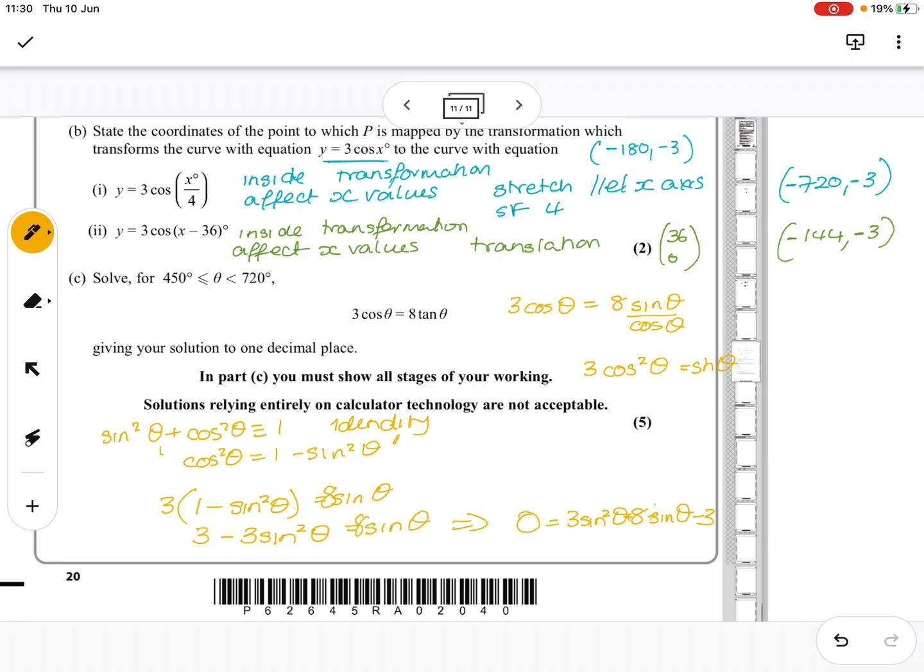So then I would put that straight into my calculator or see if I can factorise it. So 3 sin theta sin theta. 3 and 1 gives me 9. Make that a plus. Make that a minus. So I'm left with 3 sin theta minus 1 equals 0. So sin theta equals 1 over 3. Sin theta minus 3, sin theta equals minus 3. That's impossible, so we cross that one out.